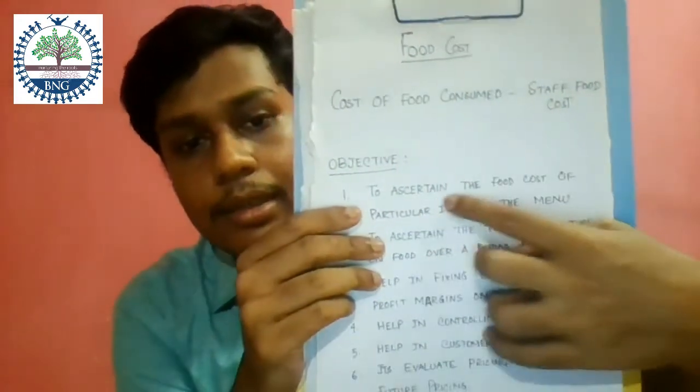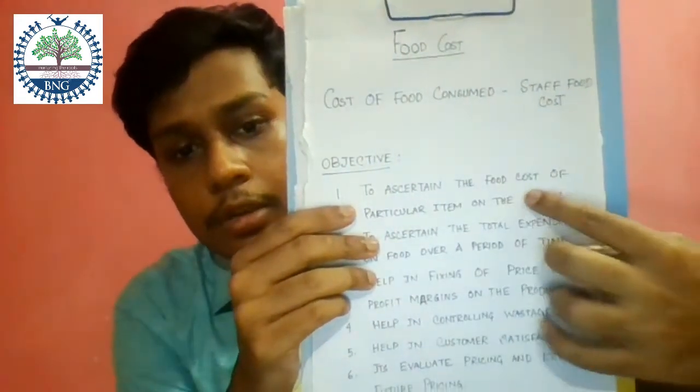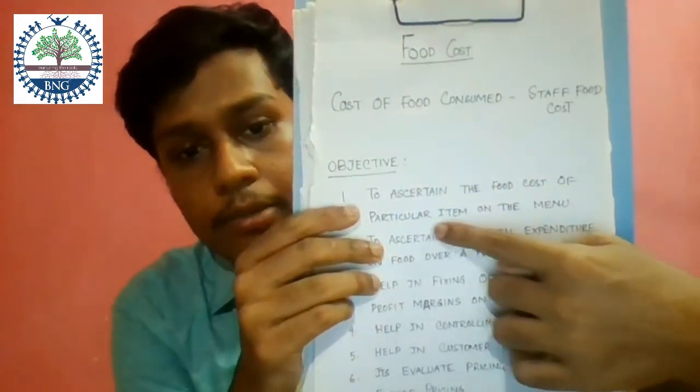Why do we calculate food cost? First, to ascertain the food cost of a particular item on the menu — to know or to fix the cost of a particular item on our menu.